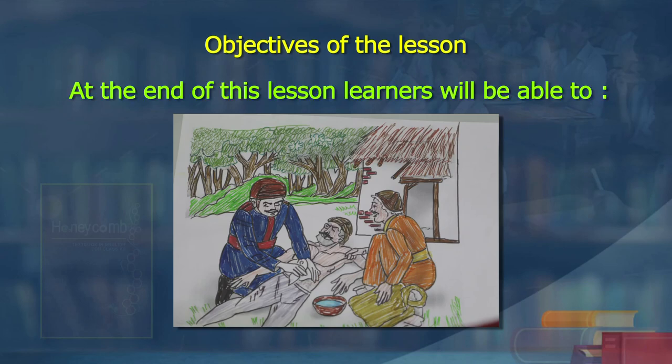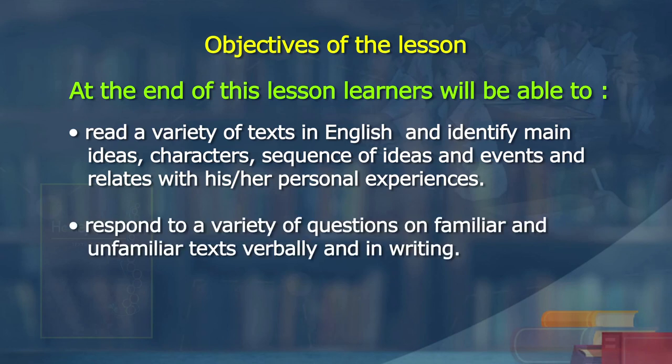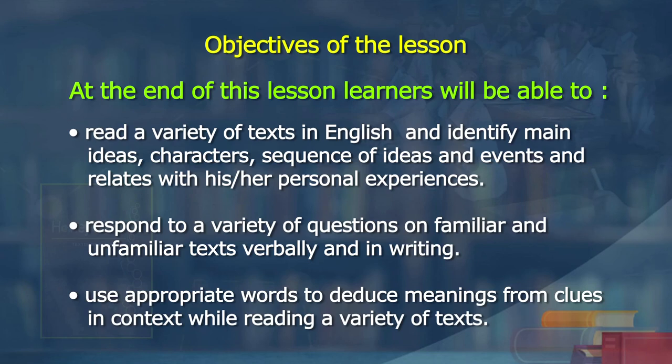Kriti, the title of the short story is Three Questions. Someone is asking three questions to someone else and trying to find answers. Let us tell our learners the objectives of this lesson. At the end of this lesson, the learner will be able to read a variety of texts in English and identify main ideas, characters, sequence of ideas and events, and relate with personal experiences. Respond to a variety of questions on familiar and unfamiliar texts verbally and in writing. Use appropriate words to deduce meanings from clues in context while reading a variety of texts. That means we are going to confine only to understanding of the text.